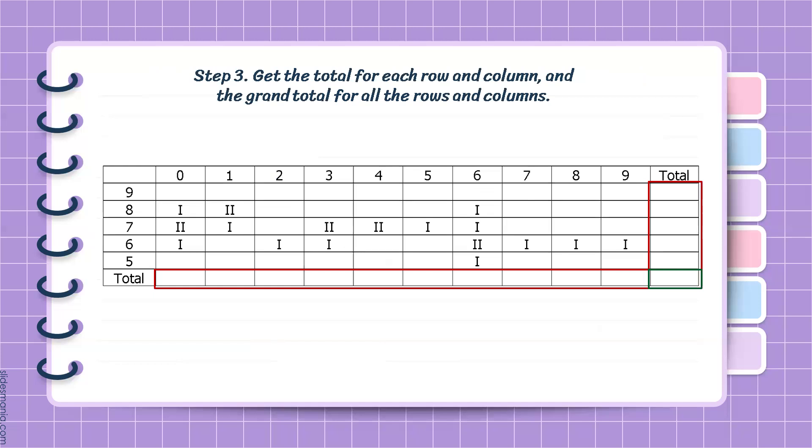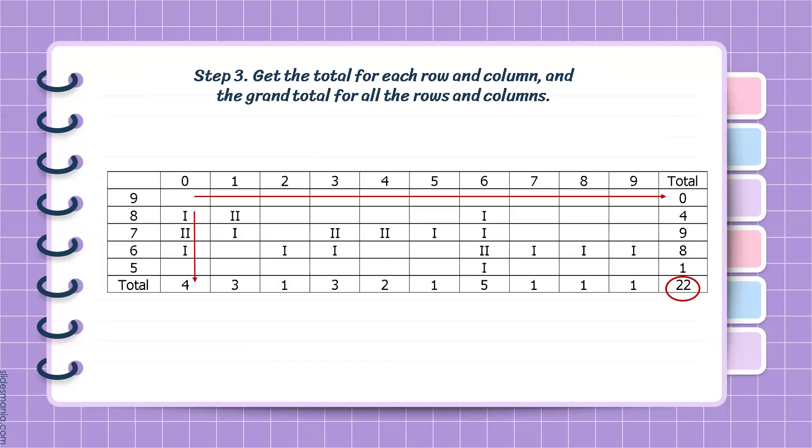Step 3 is to get the total for each row and column and the grand total for all the rows and columns, just like what is shown in this current slide. We can see that the grand total is 22. That corresponds to the total number of scores in our score distribution. And here is our final Talligram.